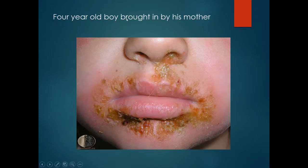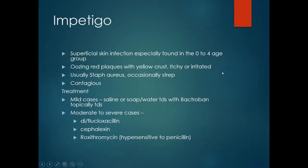A four year old boy is brought in by his mother with yellow-brown caked-on discharge around the mouth and nose. This is impetigo, a superficial infection due to staph or strep.